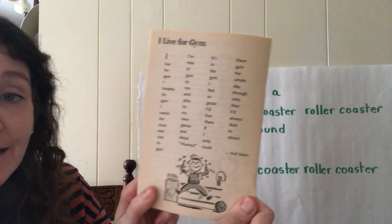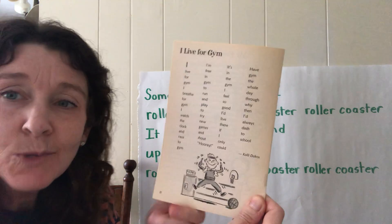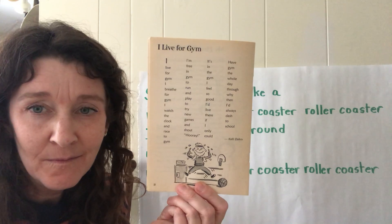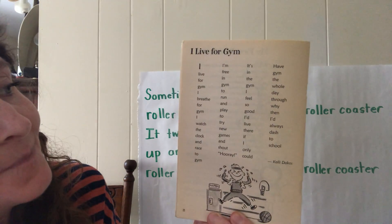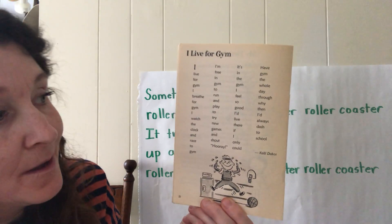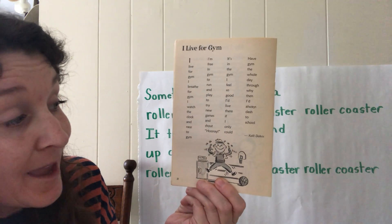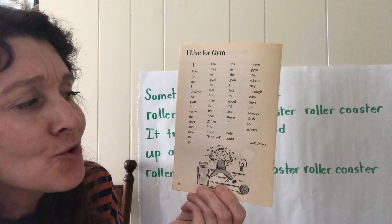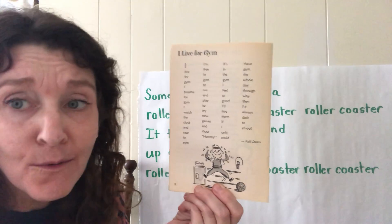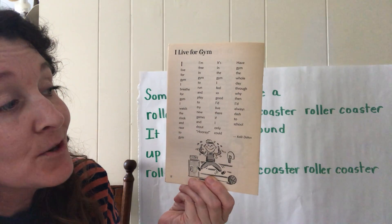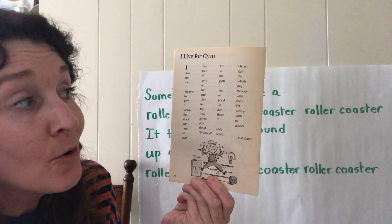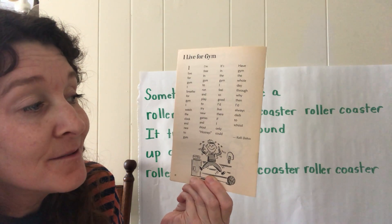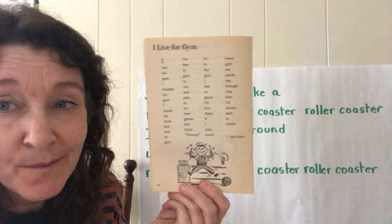This poem is by Kelly Dacos. As we're reading it, think: how did she display it on the page? 'I live for Jim. I live for Jim. I breathe for Jim. I watch the clock and race to Jim. I'm free in Jim to run and play, to try new games, and shout hooray. It's in the gym I feel so good. I'd live there if I only could. Have Jim the whole day through. Why then I'd always dash to school.'